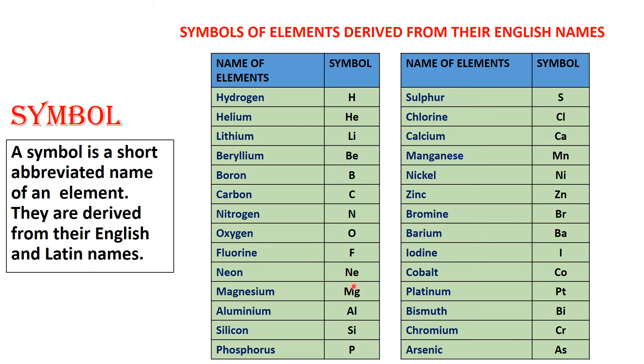These are the symbols of elements that are derived from the English names. The symbol of hydrogen is H, Helium He, Lithium Li, Beryllium Be, Boron B, Carbon C, Nitrogen N, Oxygen O, Fluorine F, Neon Ne, Magnesium Mg, Aluminium Al, Silicon Si, Phosphorus P, Sulphur S, Chlorine Cl, Calcium Ca, Manganese Mn, Nickel Ni, Zinc Zn, Bromine Br, Barium Ba, Iodine I, Cobalt Co, Platinum Pt, Bismuth Bi, Chromium Cr, and Arsenic As.